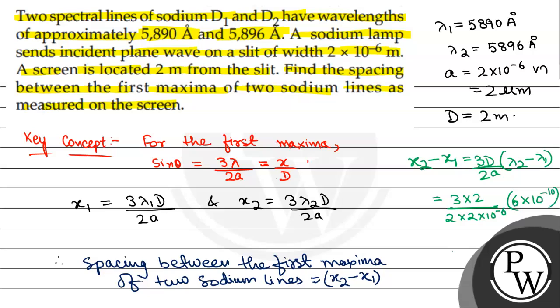Therefore, the spacing equals 9×10^-4 meters. This is the spacing between the first maxima of the two sodium lines.